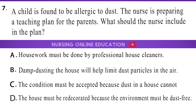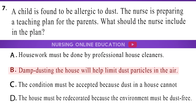Question 7: A child is found to be allergic to dust. The nurse is preparing a teaching plan for the parents. What should the nurse include in the plan? A. Housework must be done by professional house cleaners. B. Damp dusting the house will help limit dust particles in the air. C. The condition must be accepted because dust in a house cannot be eliminated. D. The house must be redecorated because the environment must be dust-free. The answer is option B: Damp dusting the house will help limit dust particles in the air.